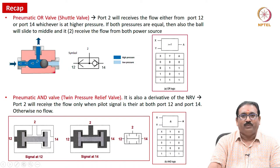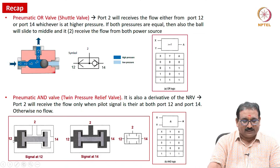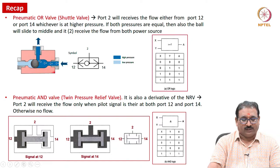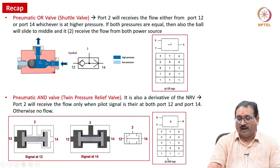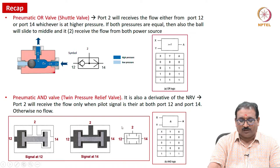Similarly, the pneumatic AND valve is a twin pressure relief valve, which is also a derivative of NRV. Port 2 will receive the flow only when pilot signals 12 and 14 are both present — that is why it is the AND function. Whenever only 12 or only 14 is present, A will not receive the flow; A receives the flow only when both signals are present. Please note the ISO symbol for the pneumatic AND valve.